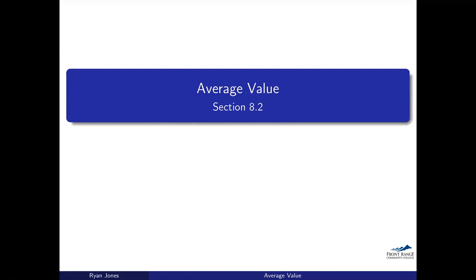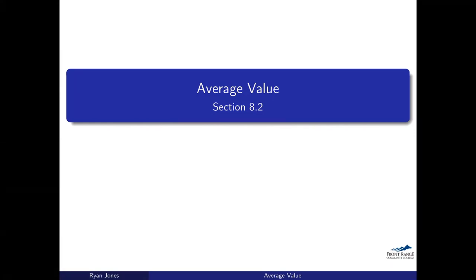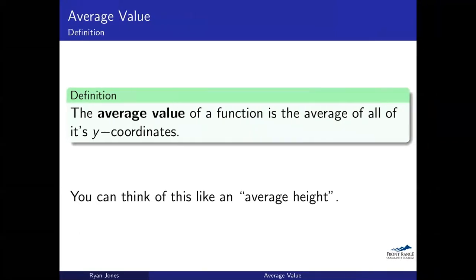Keep that idea of adding up a bunch of points and dividing by the total number of points — that being your average. If you were taking the average of a bunch of people's exam scores, you would just add them all up, divide by the number of people that took the exam, and that gives you the average value of the exam scores. So keep that in mind. Let's go ahead and get started.